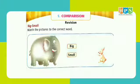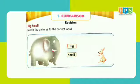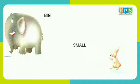First is Big and Small. Big means Bada. Small means Chota. Here you can see in this picture there is an elephant and a rabbit. Elephant is Big. Rabbit is Small.